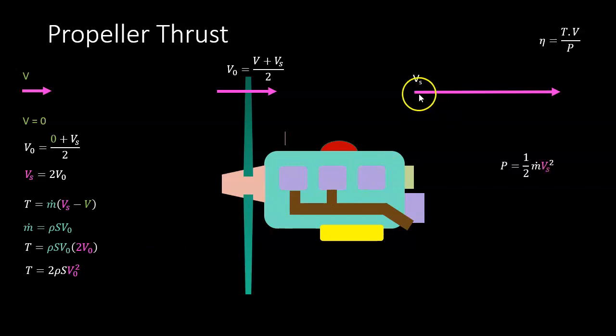If we looked at the air at this point, V would have no kinetic energy, and if we looked at the air in the slipstream, it has kinetic energy of ½mVs². Where did the air get this extra energy? It got it from the propeller and from the engine.